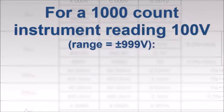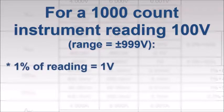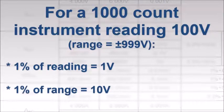For example, consider a one-thousand-count digital multimeter displaying a reading of one hundred volts. One percent of the reading would be one volt, while one percent of the range would be ten volts. So be sure to check whether the percentage applies to the reading or the range when comparing specifications of different digital multimeter models.